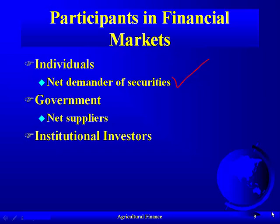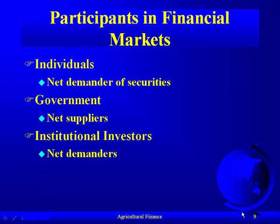An institutional investor, like a mutual fund, gets money from individuals who ask it to invest in stocks and securities. So they become net demanders, just like individuals. The institutional investor collects cash from a whole host of individuals who then invest in stocks and bonds — that's what mutual funds are. They are net demanders of securities.